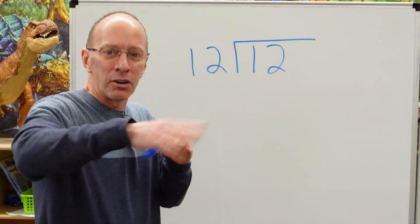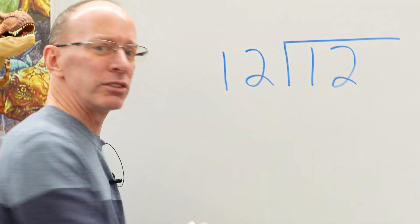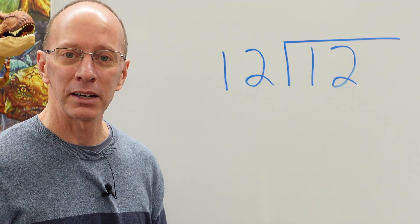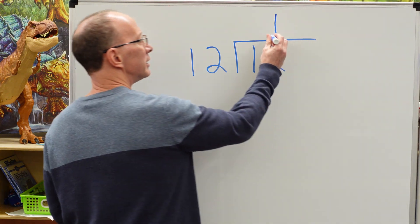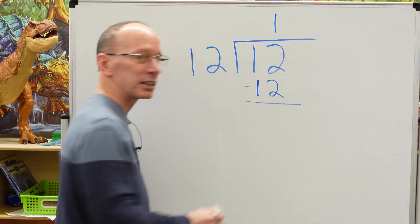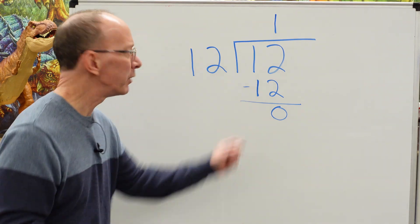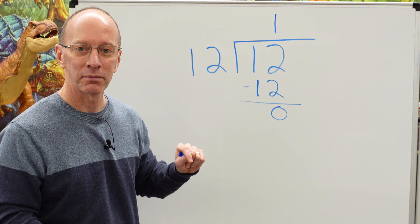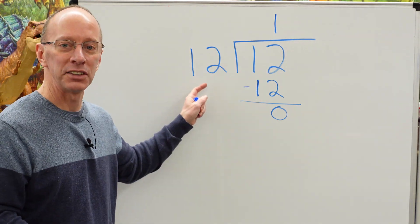I'm going to gradually build up and do more difficult ones. We have 12 divided by 12. How many times can I put this number right here into this number right there? One time. So I take 1 times 12, put the 12 right here, and then I use subtraction to see if there's anything left over, like a remainder. There is no remainder, and we do not write that zero up here. This is the dividend and this is the divisor.